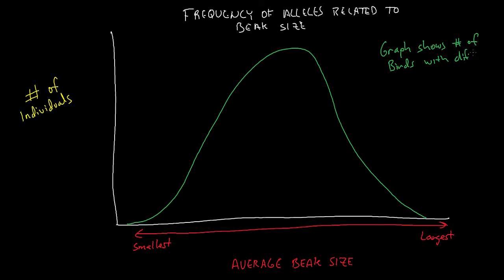So in our graph here, we see the average beak size in the middle is the peak. And then you have two extremes, the largest beaks and the smallest beaks within that population. This is the frequency of the different alleles in that population, and that shows itself in the phenotype.